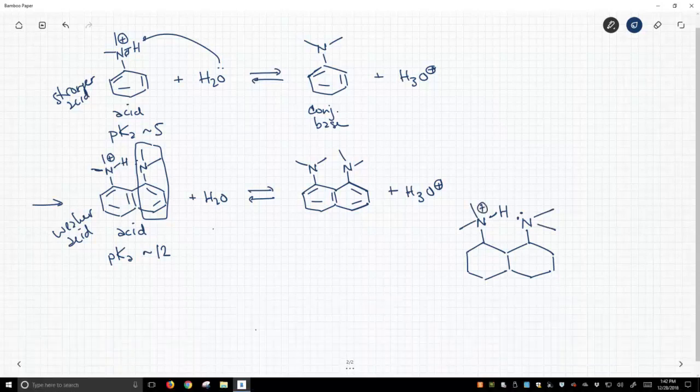Sandwiched between these two nitrogens, and both these nitrogen lone pairs are simultaneously holding on to our hydrogen. Let's finish our structure, and since there are two nitrogens holding on to the proton, it's held more tightly. If the proton is held more tightly, the structure is a weaker acid.